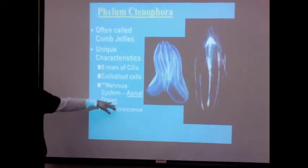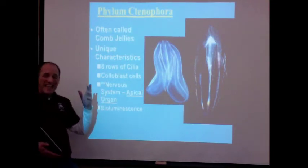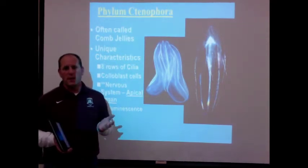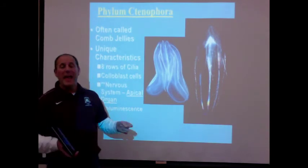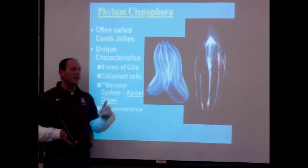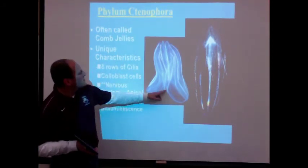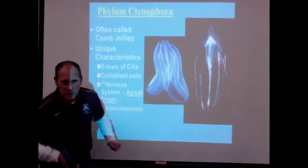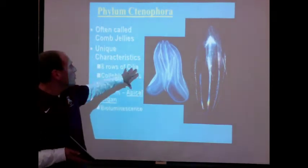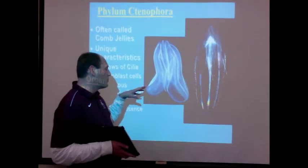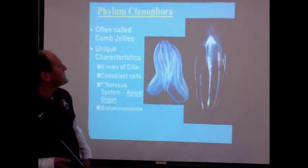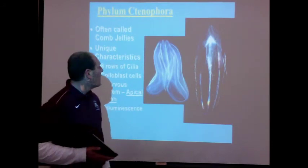Make sure you have written down that these are the comb jellies — comb jellies because of all the little cilia sticking out. Some unique characteristics: they have eight rows of cilia, and they do not have nidocyte cells — no stinging cells. If they did, they would be in the phylum Cnidaria. Instead they have something called a colloblast cell, C-O-L-L-O-B-L-A-S-T. Colloblast cells are in their tentacles — they only have a couple very small tentacles — and these cells don't sting. Instead, they produce a sticky substance. These guys move around in search of prey, and when they find it, their tentacles stick to it and move the prey into the mouth underneath.